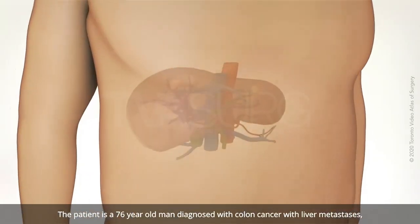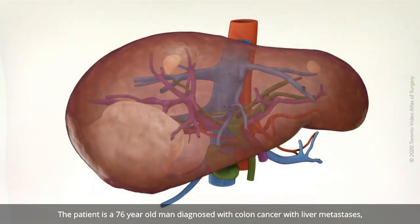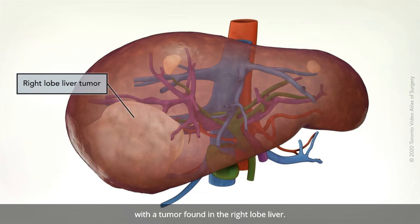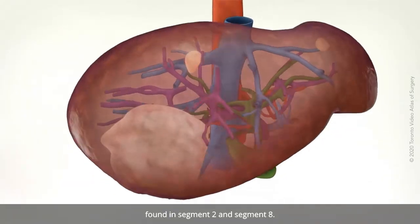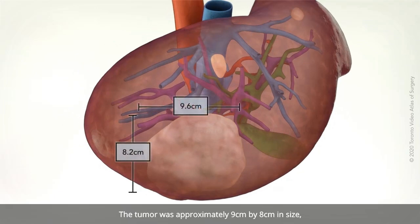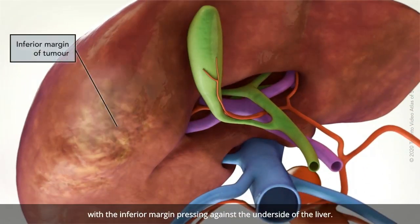The patient is a 76-year-old man diagnosed with colon cancer with liver metastases, with a tumor found in the right lobe of the liver. Imaging also indicated two benign cysts, found in segment 2 and segment 8. The tumor was approximately 9 cm by 8 cm in size, and involved liver segments 5 to 8, with the inferior margin pressing against the underside of the liver.